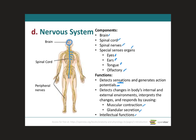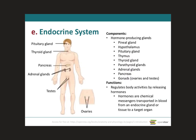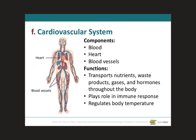The endocrine system's main function is the production of hormones from its various types of glands. These hormones target specific organs by traveling through the blood vessels. That is the main function of the endocrine system.